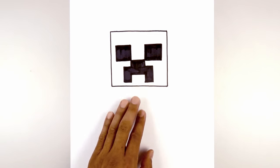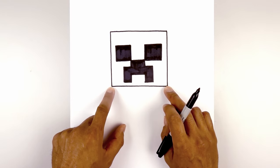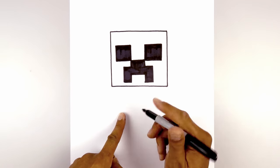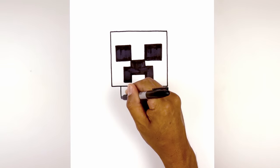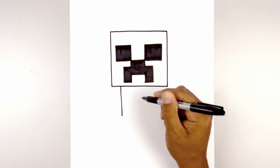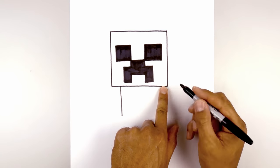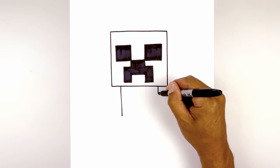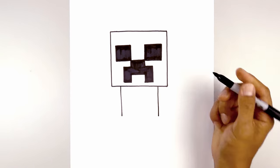Now that we've drawn the head, let's work our way down the body. So from the corners of the head, we're going to step in and draw two straight lines coming down the sides. We'll start on the left, straight down to right about there. Now we're going to leave that same size gap over on the right and come straight down towards the same height.